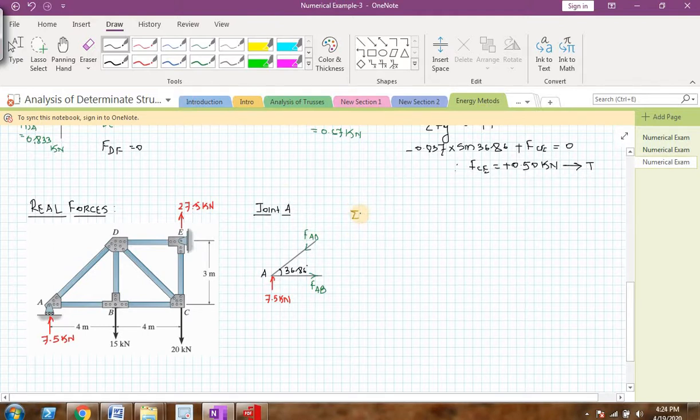Let us apply equilibrium equations. First, let me apply the equilibrium equation summation of Fy equal to 0 and my sign convention will be all the upward forces as positive. So 7.5 is upward, I should write plus 7.5 and this FAD is inclined, it will have components like this. The AD vertical component of AD is downward, so I should write minus FAD into sin of 36.86. I will equate it to 0.